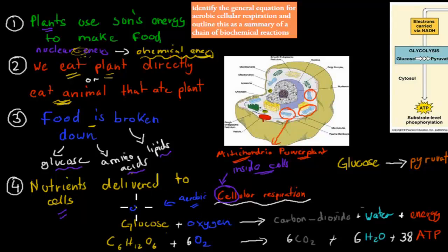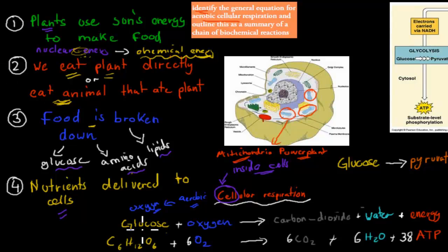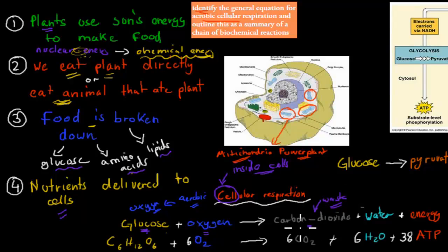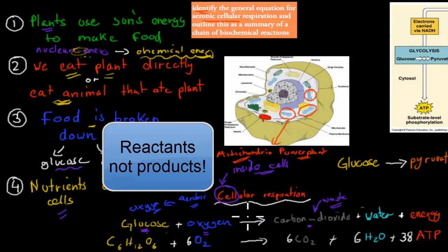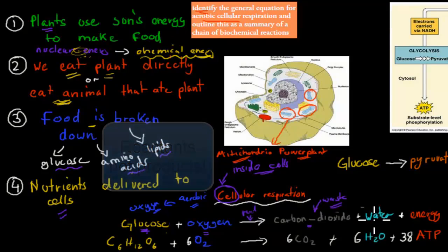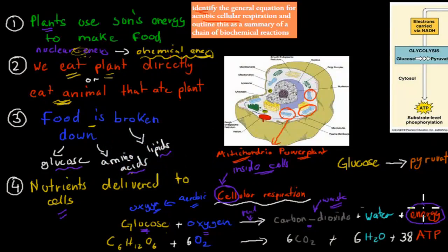We need oxygen present for aerobic cellular respiration to happen. The general equation is: glucose plus oxygen produces carbon dioxide, water, and energy. The carbon dioxide is a waste product that gets used again by plants for photosynthesis. The energy is why we do all of this — we need it to move, maintain, and repair our cells.